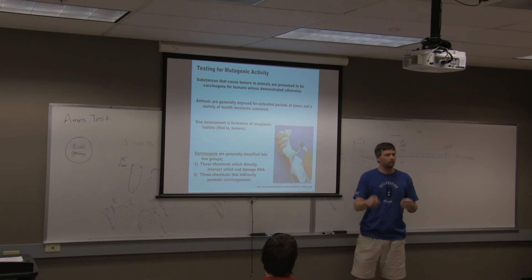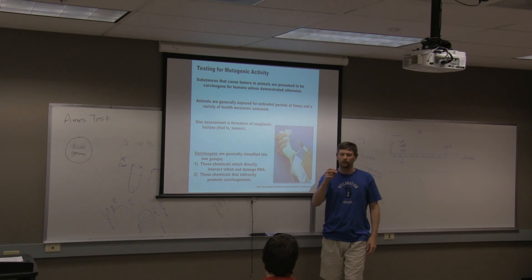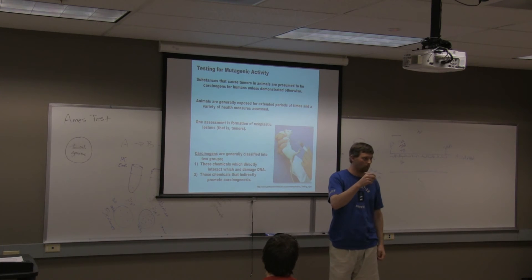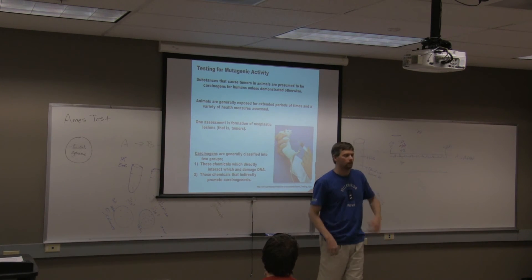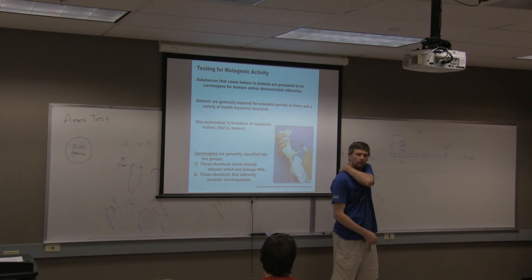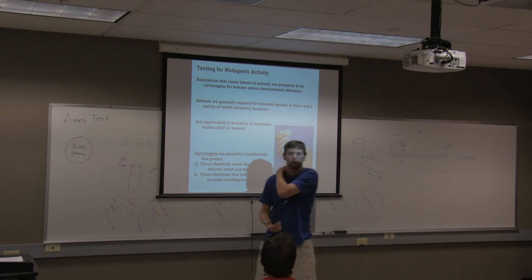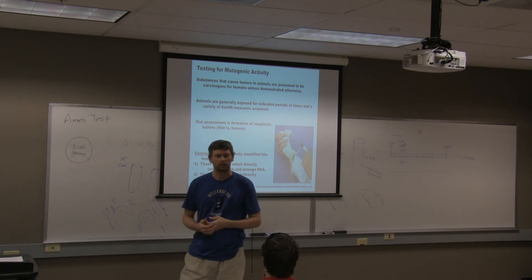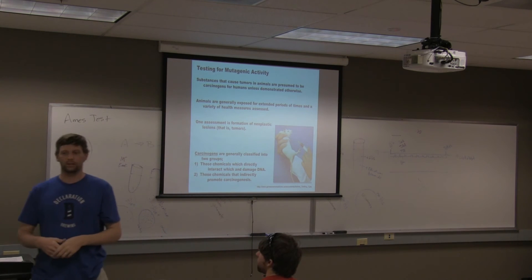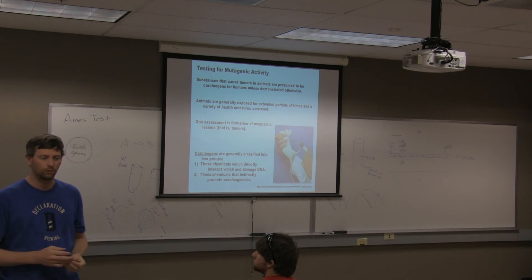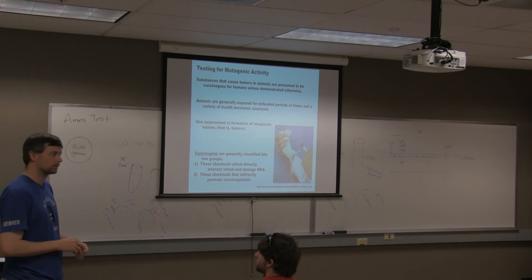Quite often what they'll do is they'll get the chemical in soluble in some solution. It could be water. It could be alcohol or something like that. And they'll shave the back of the mouse. And they'll basically use like a fingernail painting brush. And brush that onto the mouse's back every day at a certain time. So, there's a continual surface. Continually exposed.